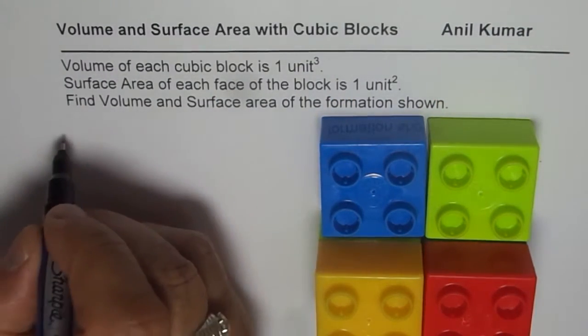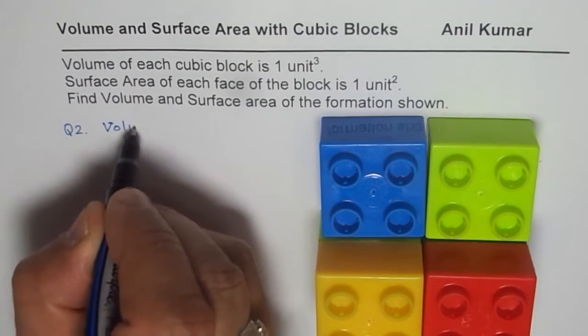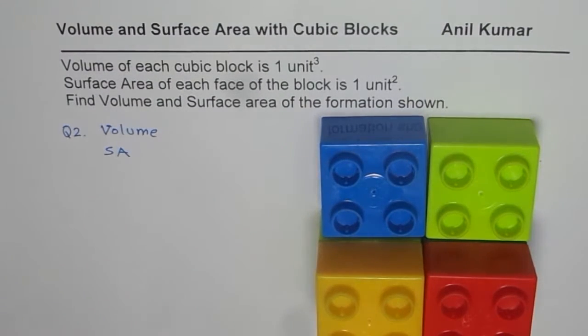Your question now, question 2 is: find volume and surface area for this formation. This is a new formation. You may observe that we are using the same number of blocks. So when you use same number of blocks, what happens to the volume and what happens to surface area. That is for question 2.